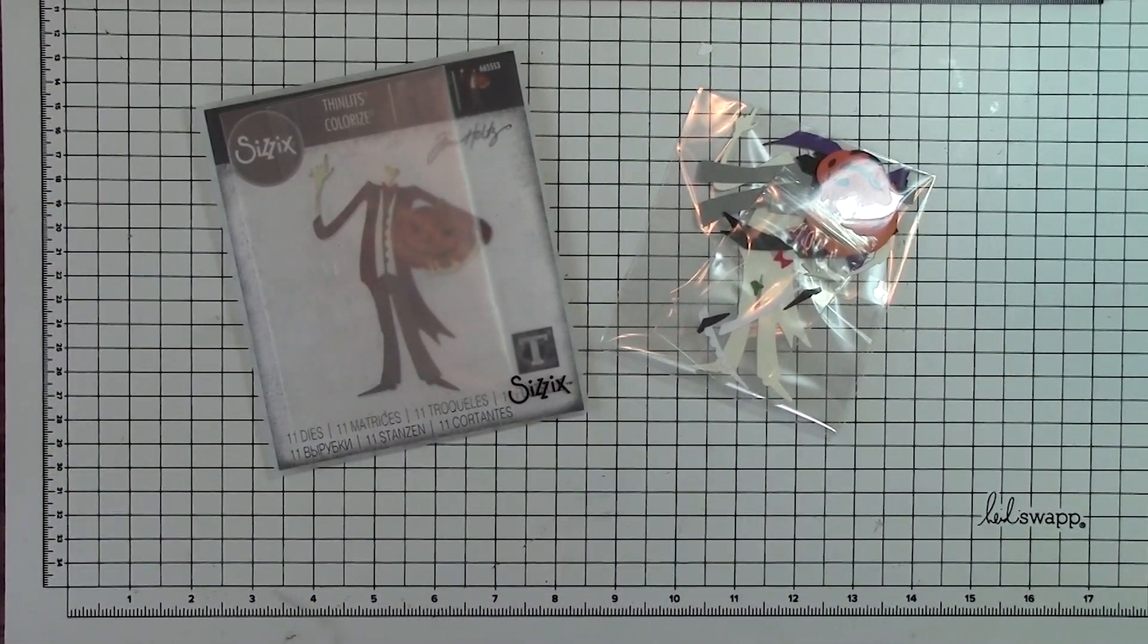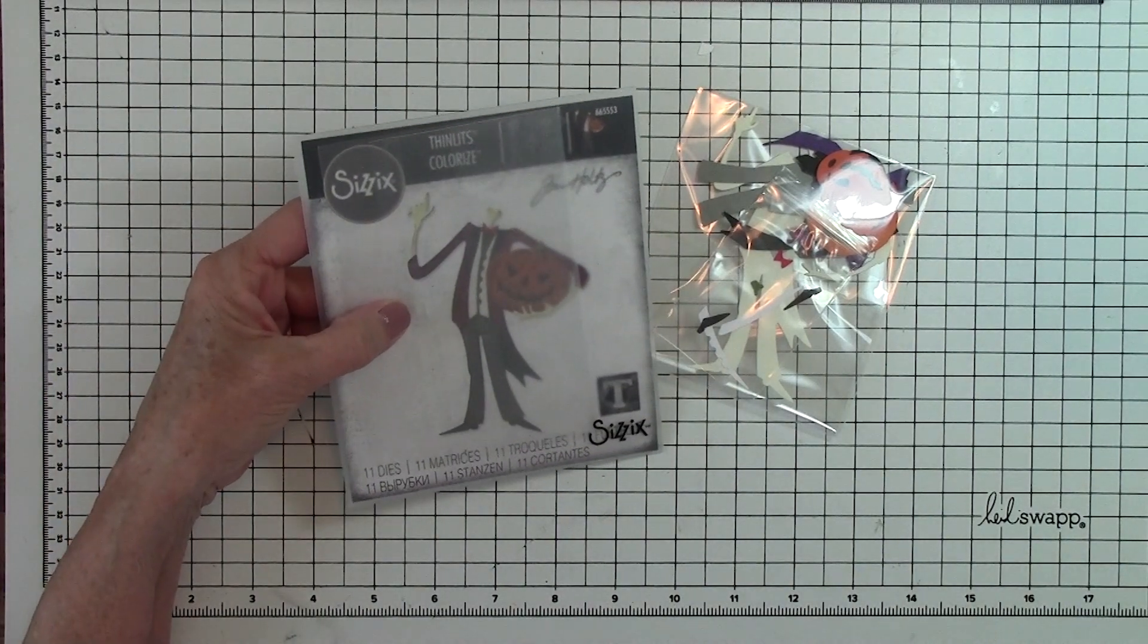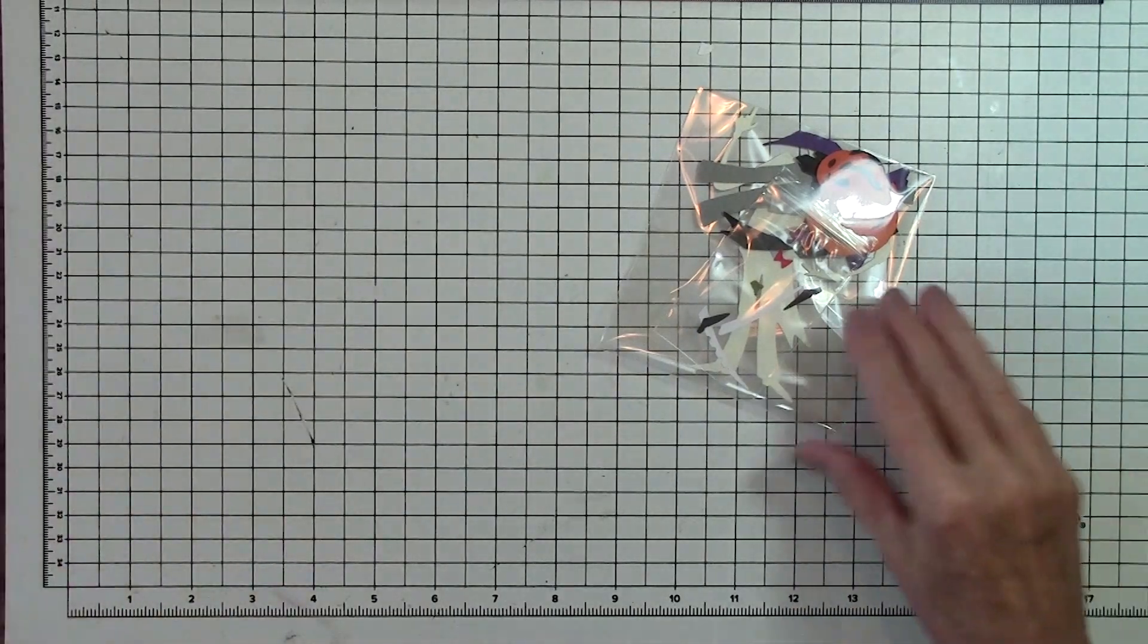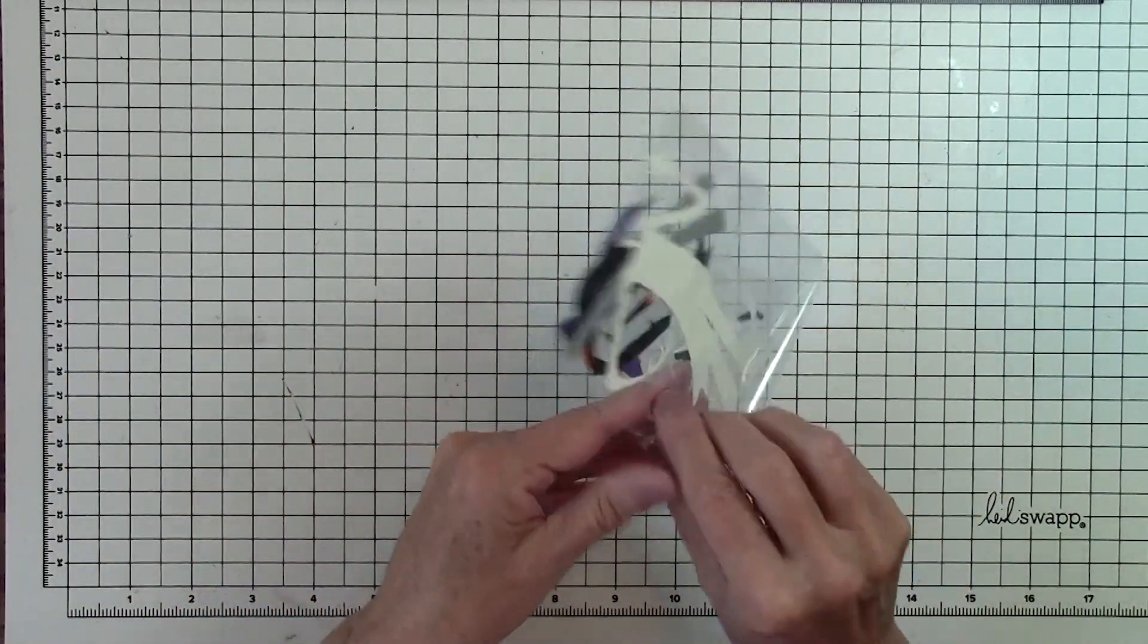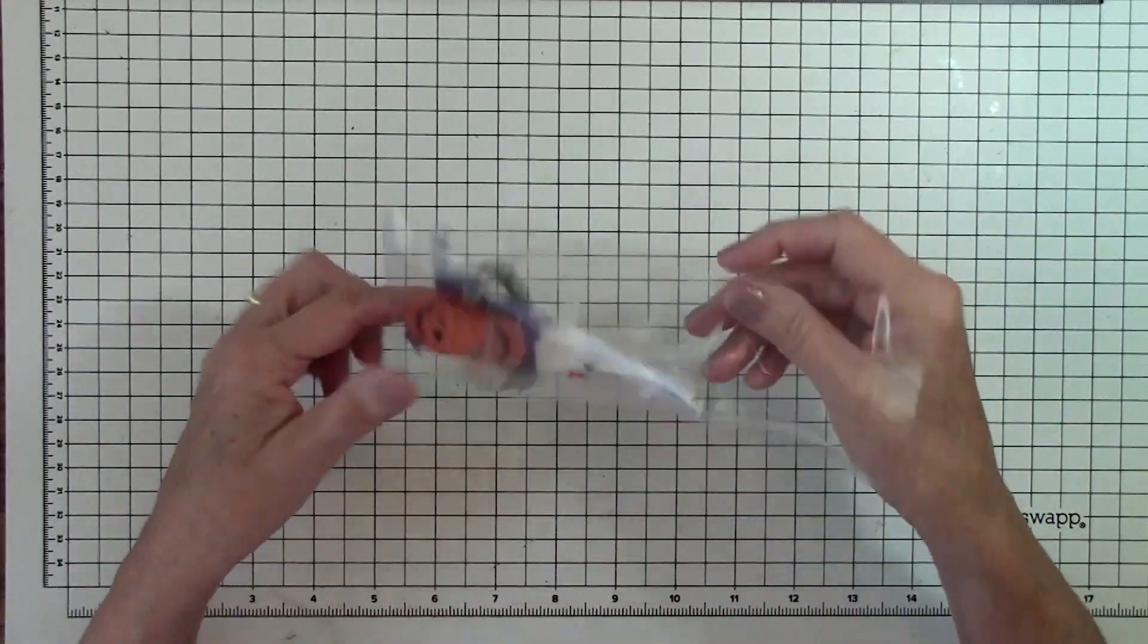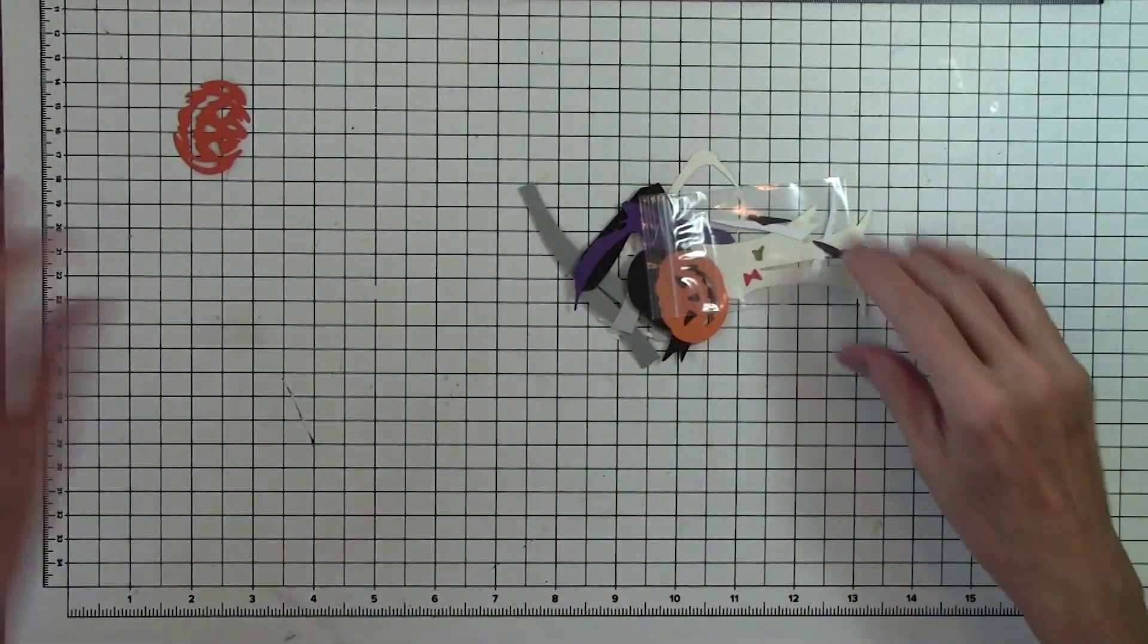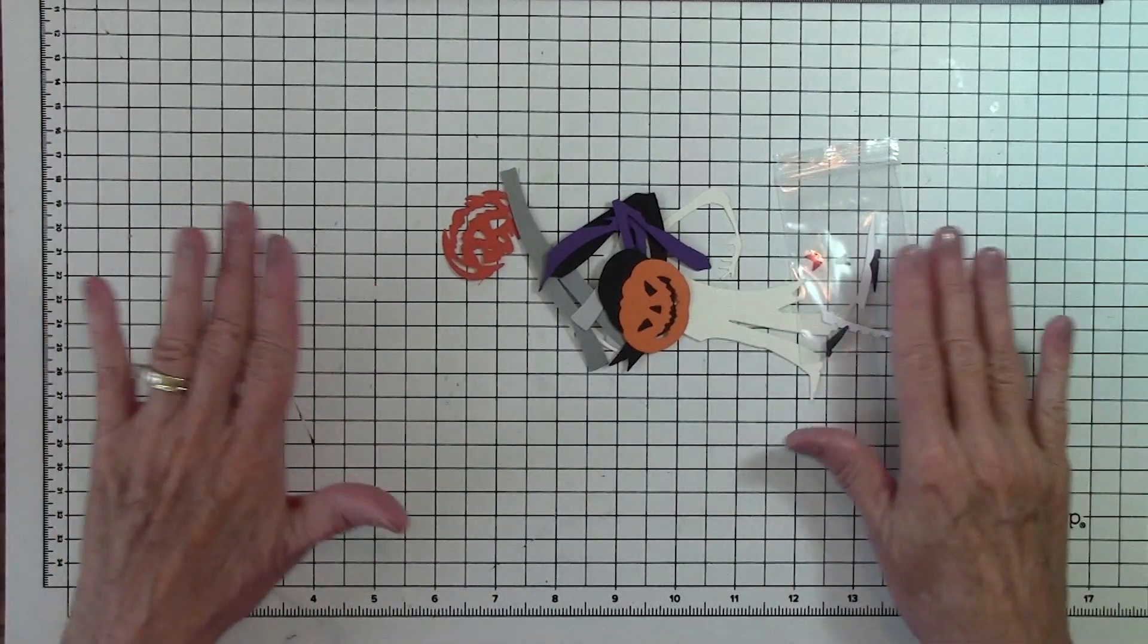This is Mr. Pumpkin Head kit. It also is a Sizzix die, a Colorize by Tim Holtz. So in the kit, I get this pack of papers. Go ahead and take them out. And we're going to begin by placing our papers in sort of an order.